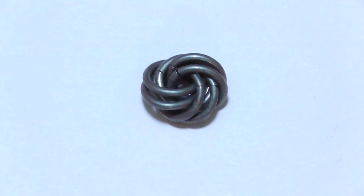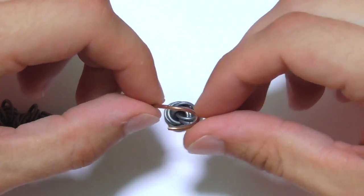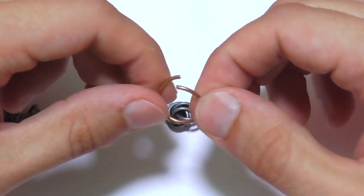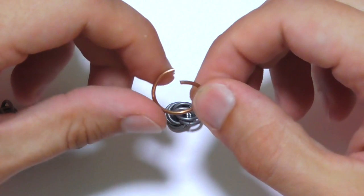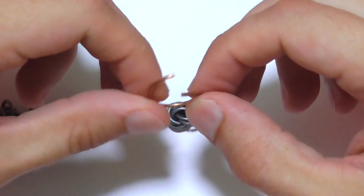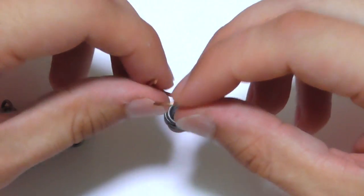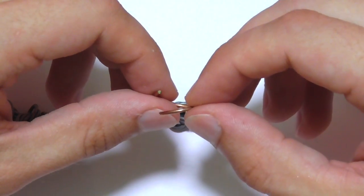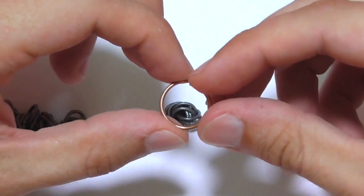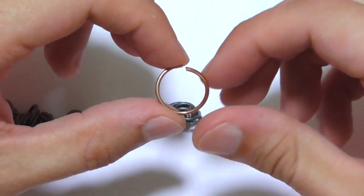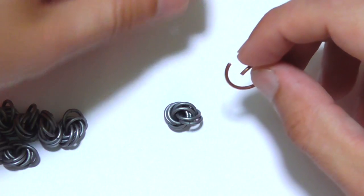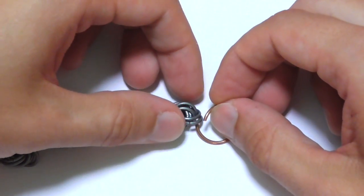To connect all the knots I use copper rings, rings made of copper wire with the diameter of the wire 1.4 millimeters and inner diameter is 14 millimeters. Okay, now let's attach this ring to our knot here. Let's take another knot.